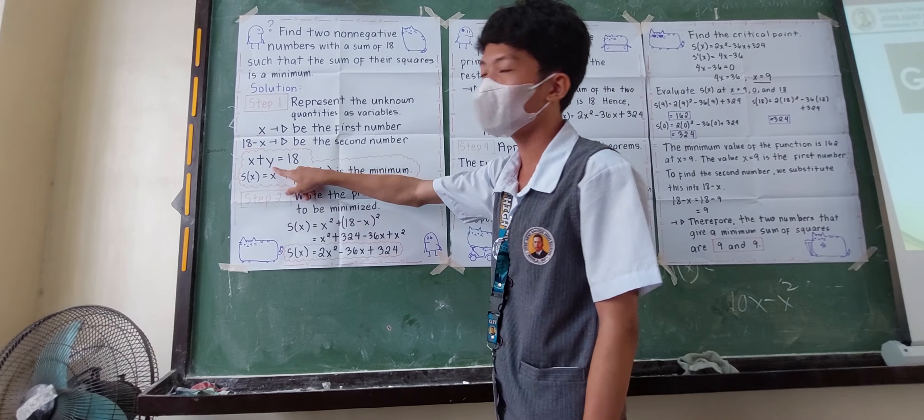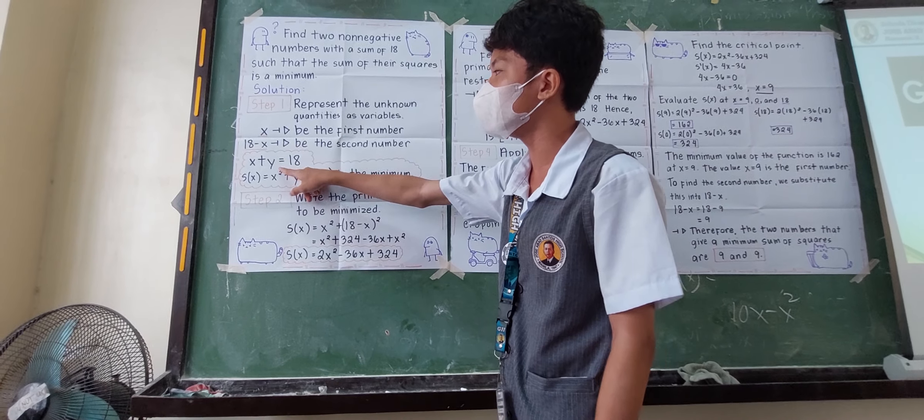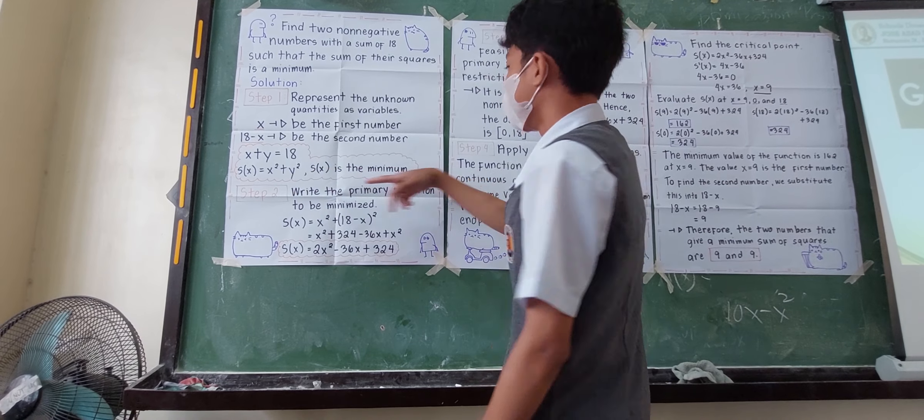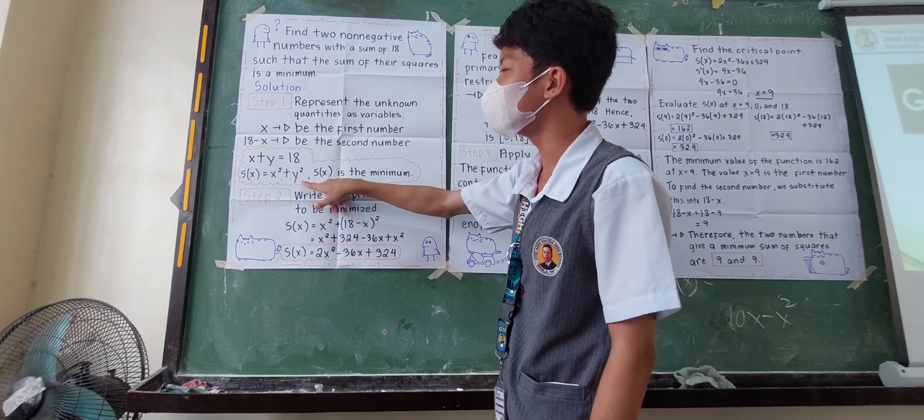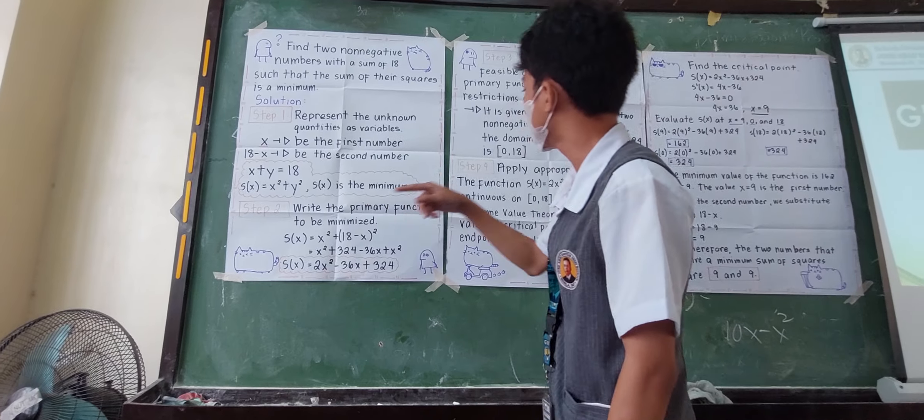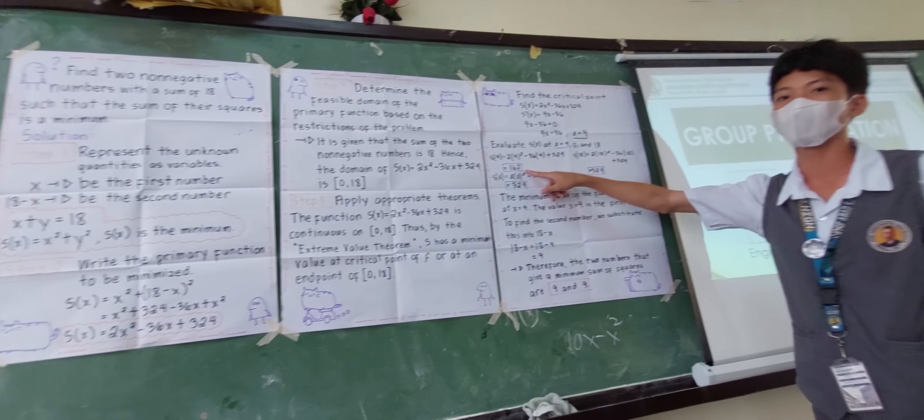Our X is 9 and Y is 9. 9 plus 9 is equal to 18. 9 squared plus 9 squared is equal to 81 plus 81 is equal to 162, which is our minimum value. Thank you.